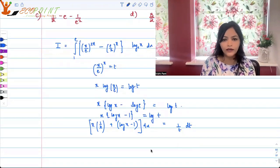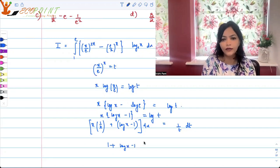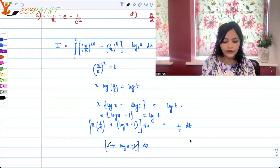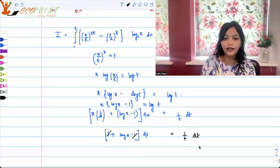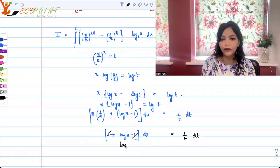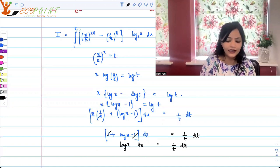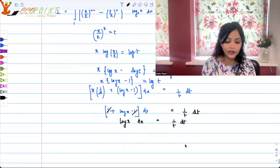So this means that what we get is 1 plus log x minus 1 dx, because this x cancels. So this 1, 1 cancels, and this is equal to 1 upon t dt. So now life seems to be a little more simpler. So this is log x dx is equal to 1 upon t dt, and we can do this substitution back there.